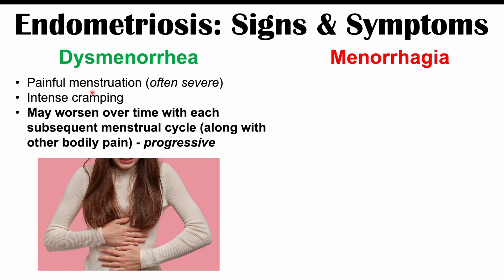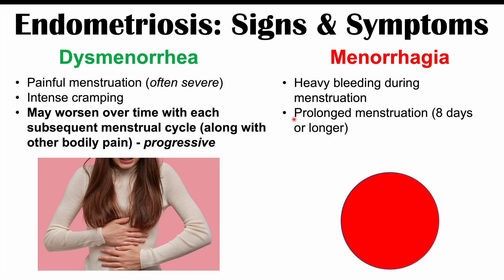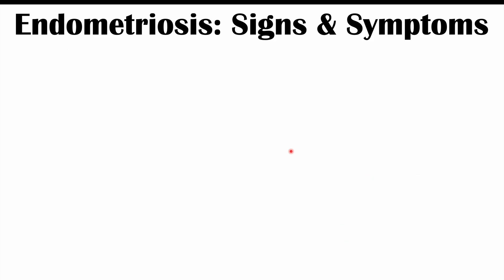Another potential sign of endometriosis is menorrhagia — heavy bleeding during menstruation — which can also present as prolonged menstruation, meaning longer than seven days, typically eight days or longer. Bleeding can also be irregular as well.